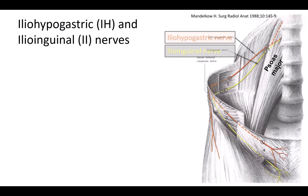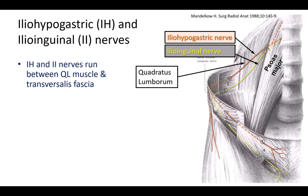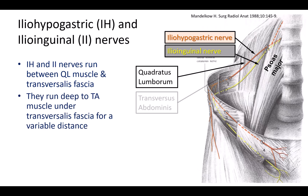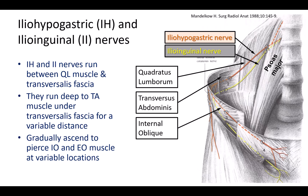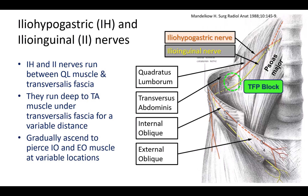The L1 branches — the ilioinguinal and iliohypogastric nerves — have a different anatomical course from the other thoracoabdominal nerves. They emerge from the lateral border of psoas major, run over the anterior surface of quadratus lumborum, and initially run deep to transversus abdominis for a variable distance before ascending into the TAP plane between transversus and internal oblique muscles. They then pass through external oblique after a short and variable course in the TAP plane, and as a result are sometimes missed with lateral or posterior TAP blocks. If they are of primary interest, they are best blocked either posteriorly — where they lie deep to transversus abdominis — using the transversus fascia plane (TFP) block, or more anteriorly in the region of the ASIS with an ilioinguinal/iliohypogastric block.